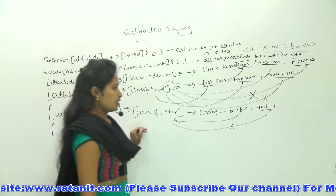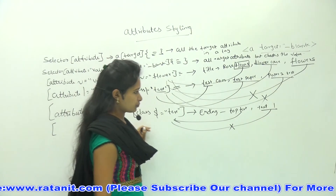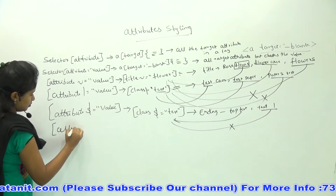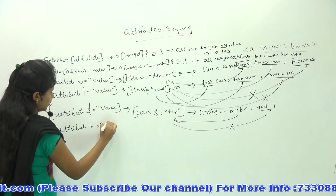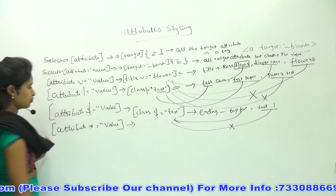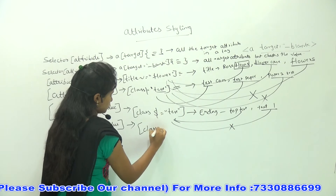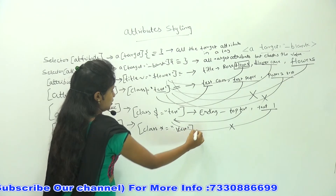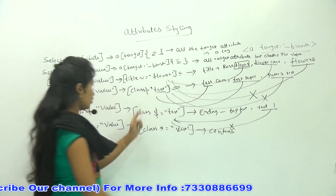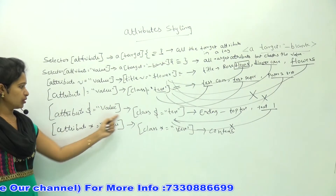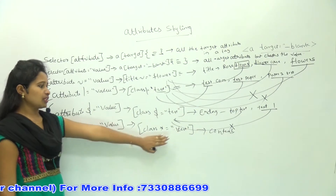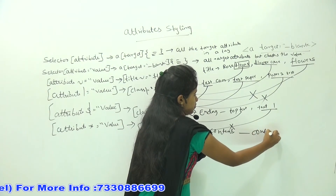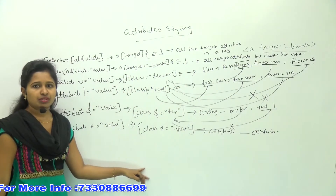We can also use the asterisk (*) symbol: class*=test. This means the attribute value must contain 'test' anywhere in it — we discussed caret as starting, dollar as ending, and asterisk as containing. At least the value 'test' needs to be contained in the attribute value name.